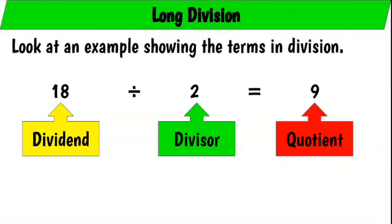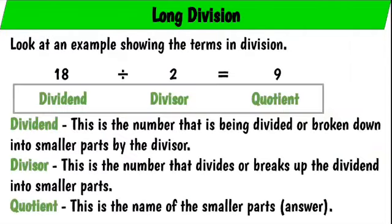9 is the quotient. What do these terms mean? Dividend: this is the number that is being divided or broken down into smaller parts by the divisor.